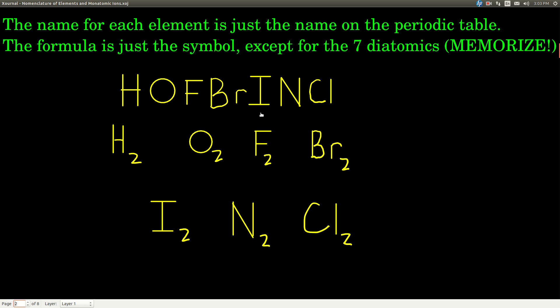So if we say hydrogen, just the word hydrogen, it means H₂ — two atoms of hydrogen attached to each other. Same thing for oxygen, fluorine, bromine, iodine, nitrogen, or chlorine. If we wanted to say just a single atom of hydrogen, we'd say atomic hydrogen or atomic oxygen. But if we just say hydrogen, we mean H₂. If we just say chlorine, we mean Cl₂. So if you see a symbol, the name is just the name of the element, except for the seven diatomic Hofbrinkl — just remember there's two of those guys.